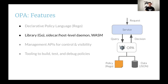OPA is written in Go and it's designed to be as lightweight as possible. All the policies and data OPA needs for evaluation are stored in memory. You can think of OPA as a host-local cache for your policy decisions. You can deploy OPA as a sidecar, as a host-level daemon, or embed it inside your Go code as a library. You can even compile your Rego policies into Wasm executables and use them to evaluate different inputs and data.